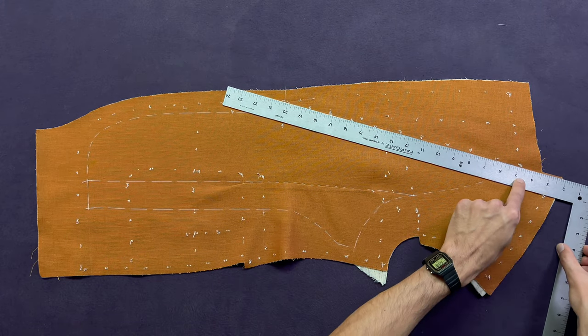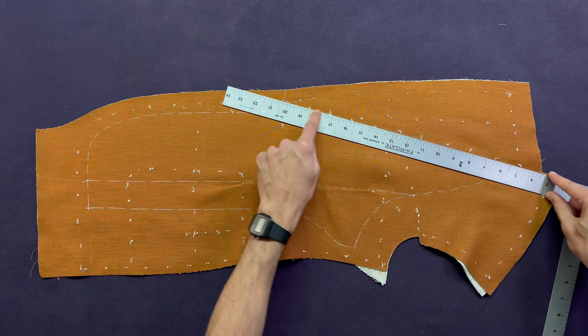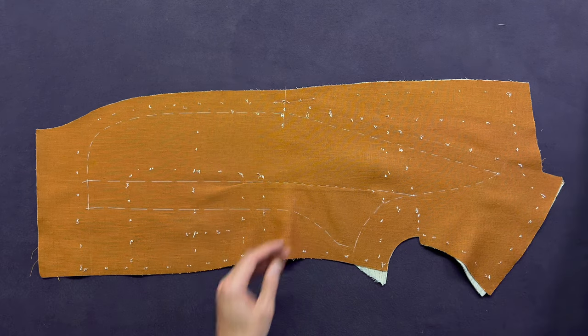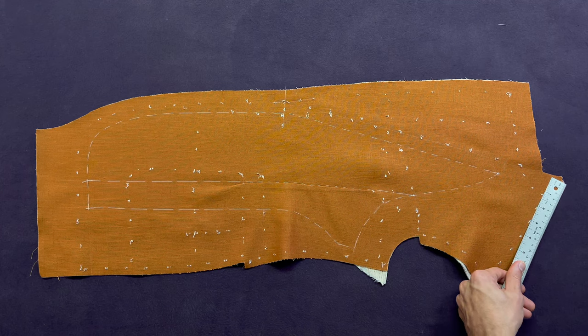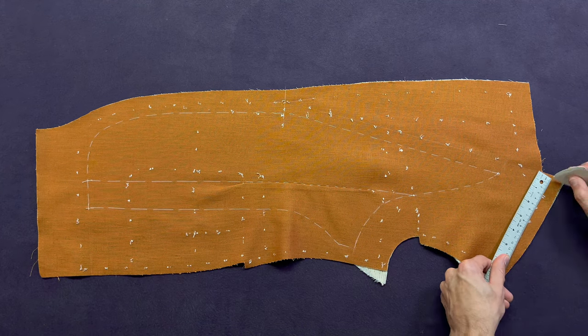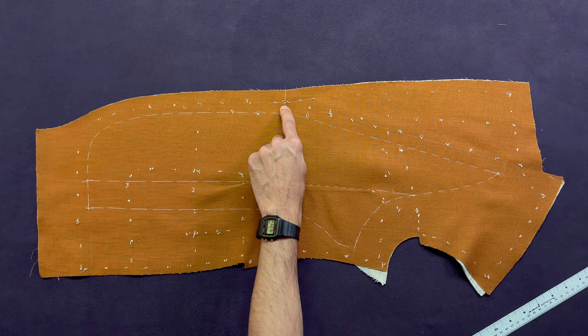If I align this side of my ruler with the neck point, inch and a quarter over, all the way down is going to be where my brake line is. If you don't have an L-square and you're using a smaller ruler, simply from your neck point, measure inch and a quarter or three centimeters, mark that point and then connect that point all the way to your first button.